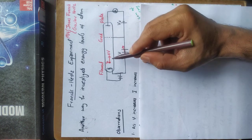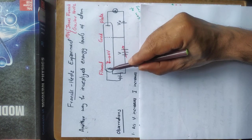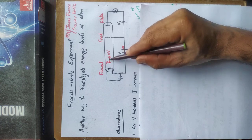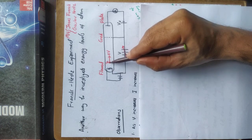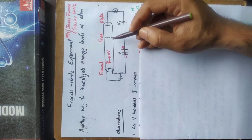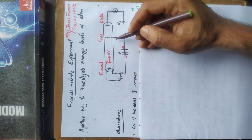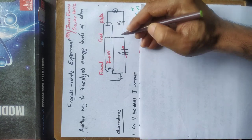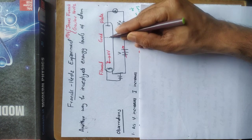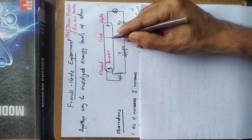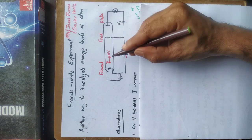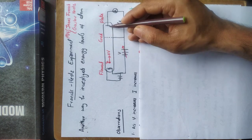Then, electrons are generated using a tungsten filament by thermionic emission. A grid with a positive potential is kept to accelerate electrons towards the plate.